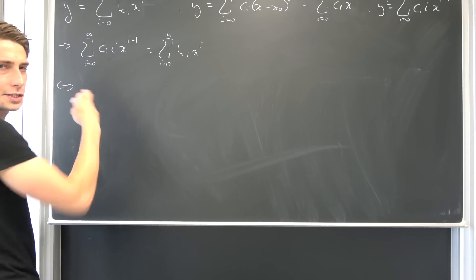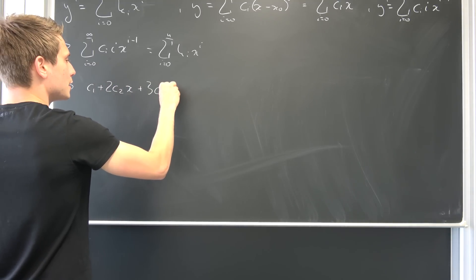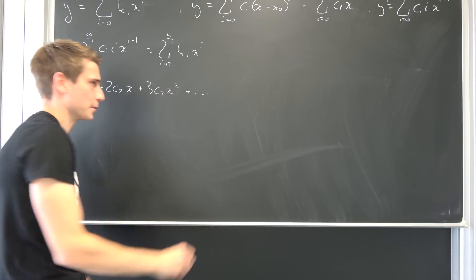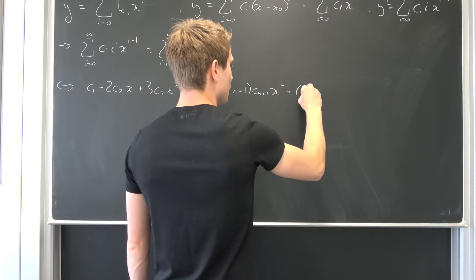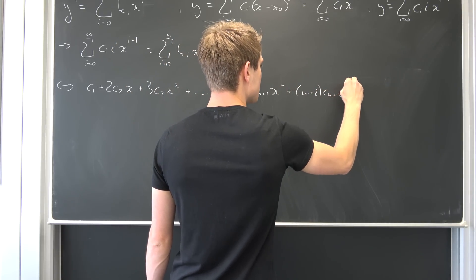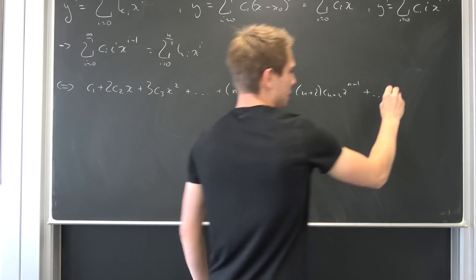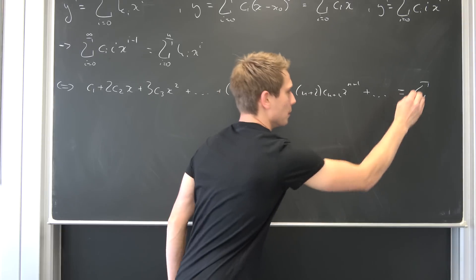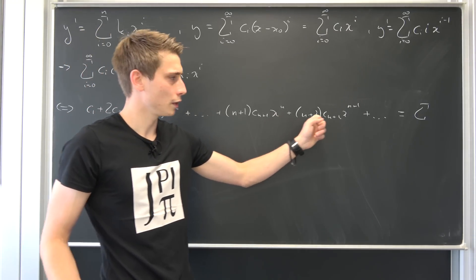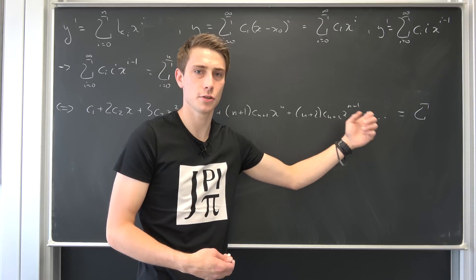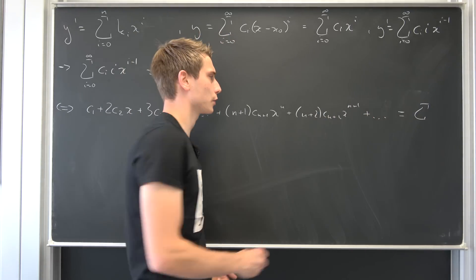Let's write this out: the first term is 0, then we have c_1 plus 2c_2 x plus 3c_3 x squared, and so on — I hope you can see the pattern — up to (n+1) c_{n+1} x to the n, plus (n+2) c_{n+2} x to the n+1, and then infinitely many more terms. This equals the right-hand side. You can see we would have an nth degree polynomial if all those coefficients c_{n+1}, c_{n+2}, and so on are equal to 0. So our condition to reduce this polynomial is: c_{n+2} = c_{n+3} = ... = 0.